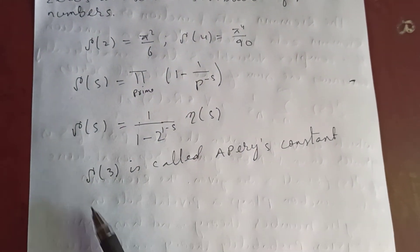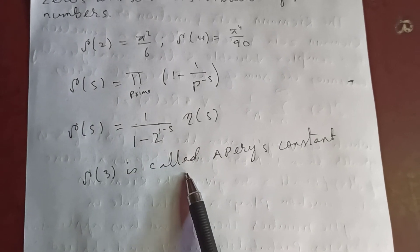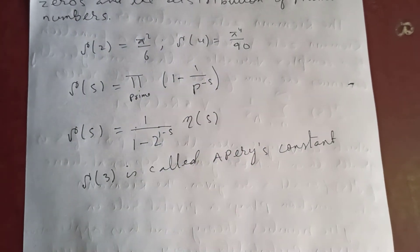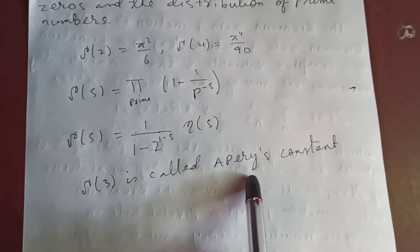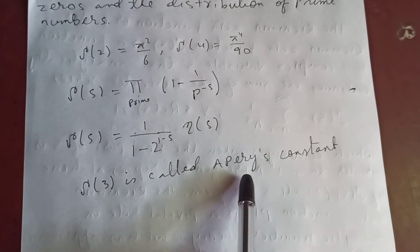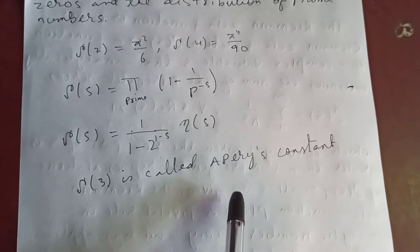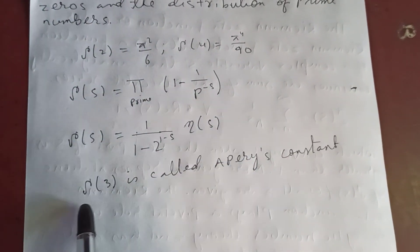Zeta of 3 is called Apéry's constant. Zeta of 3 was first studied by Apéry, a famous mathematician, and he proved that zeta of 3 is irrational.